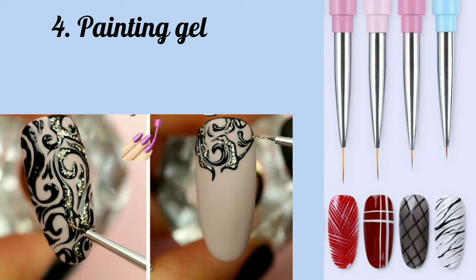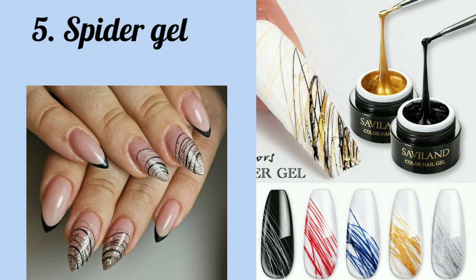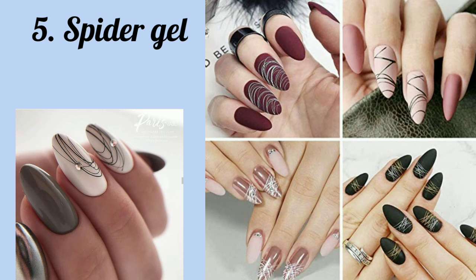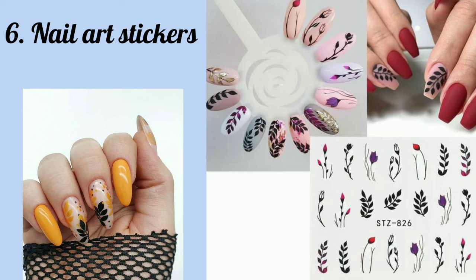Number four is painting gel — it is used to create any design on top of gel nail polish. Number five is spider gel — it comes in a gel form, and many people are not even aware of it. It is quite easy to use and creates very nice nail art.